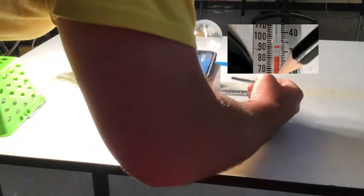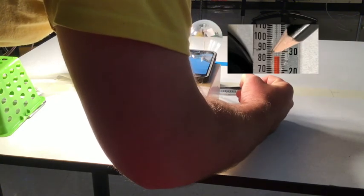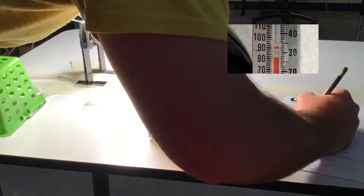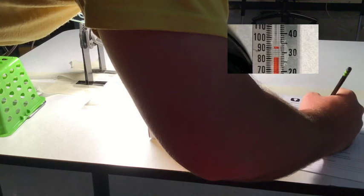All right, so it's been three minutes. Let's go ahead and look at where our temperature is. Our temperature, you can see it's moved from just below 80 to just above 80. So we're going to round down just like we did before. And we're going to say our temperature after three minutes was 80 degrees Fahrenheit.